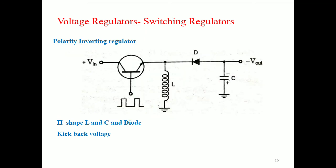The polarity inverting converter is similar to the step-down version, but with an interchange of the diode and the inductor. When the transistor is saturated, current flows through the inductor. When the transistor is cut off, the magnetic field collapses and the inductive kickback keeps the current flowing in the same direction. Since the transistor is off, the only path is through the capacitor. Checking the direction of the charging current through the capacitor, the output voltage is found to be negative — that is why it is called the polarity inverting regulator.